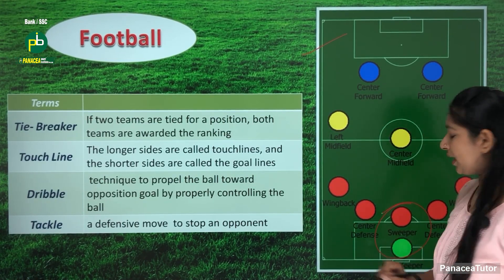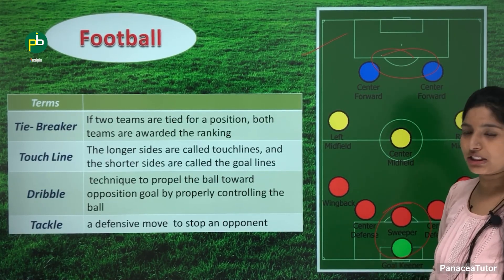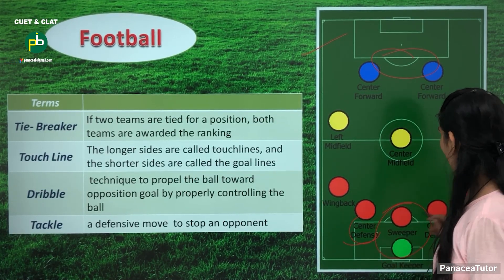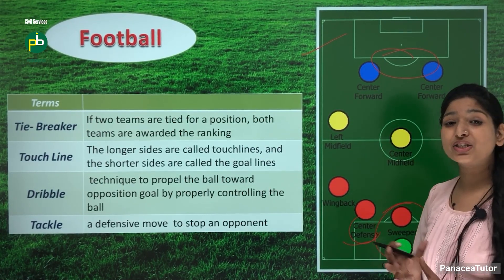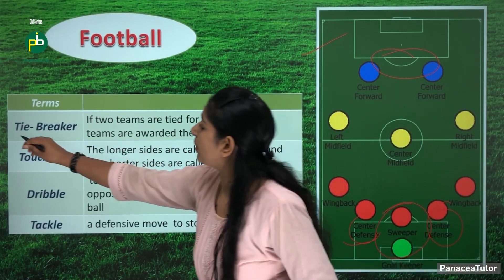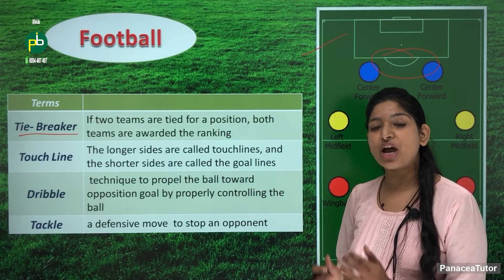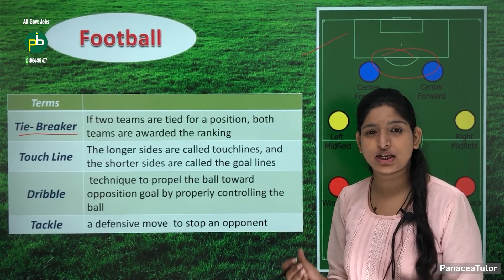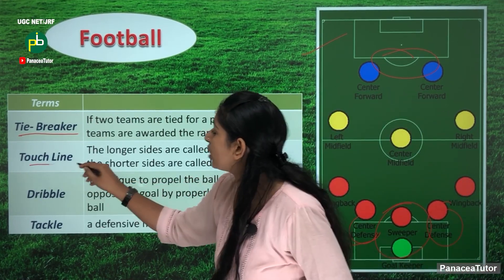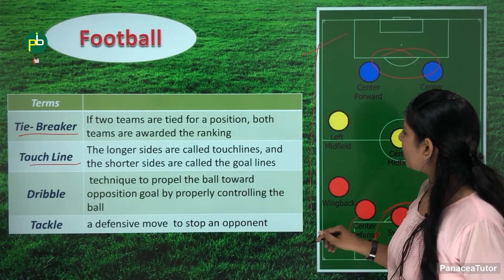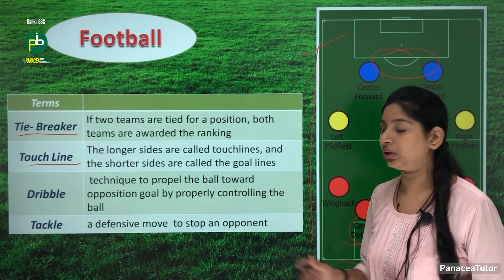The person who stands at the back is known as sweeper. The defenders are also called stopper. They are called tie breaker — a situation where if there is a tie between two teams, the rule is called tie breaker. The touch line refers to the longer sides of the football field.